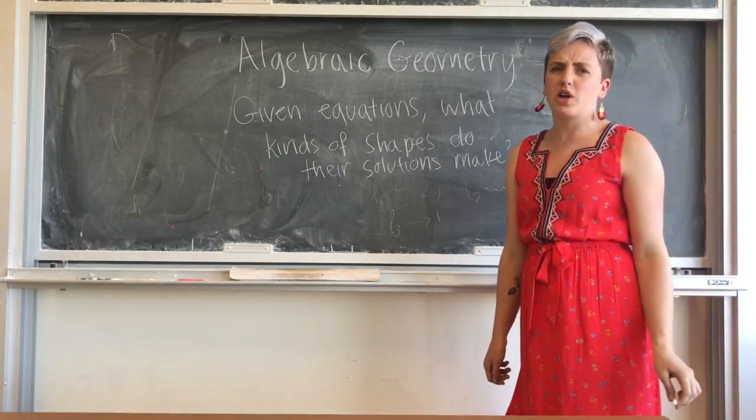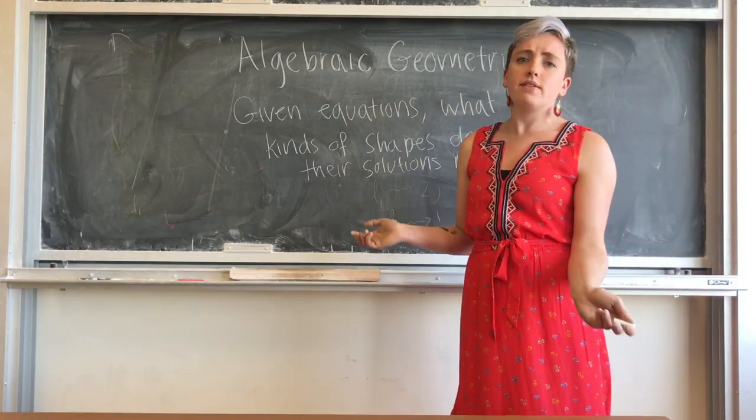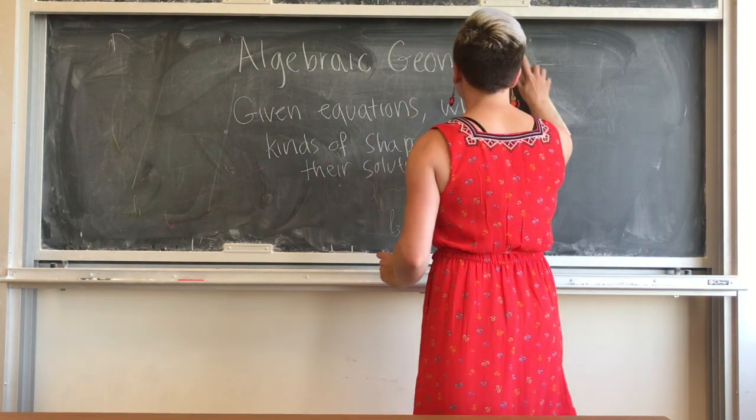This seems like kind of a weird question. Why would a set of equations give you a shape? Let's do an example.